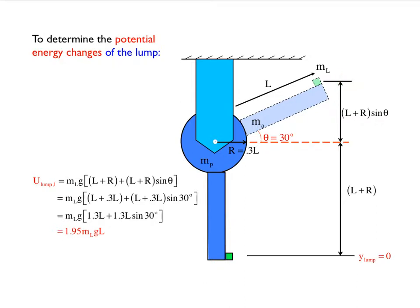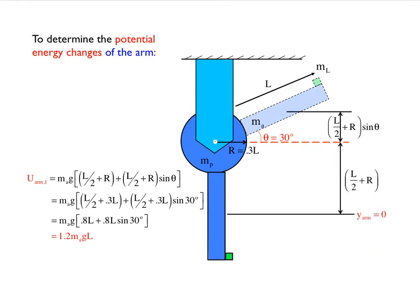So the initial potential energy is going to be the mass times gravity times that coordinate, which is going to end up ultimately by the time we do all the math equaling 1.95 mgL. A similar evaluation for the arm is going to see the arm center of mass starting here, a distance L over 2 plus R times sine of theta above the horizontal line here, and it's going to swing down to this position here above this horizontal line. That distance is going to be L over 2 plus R.